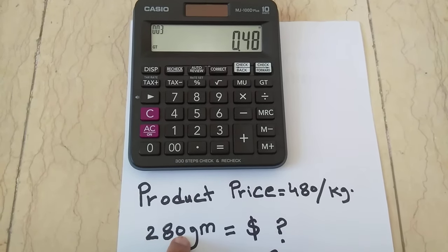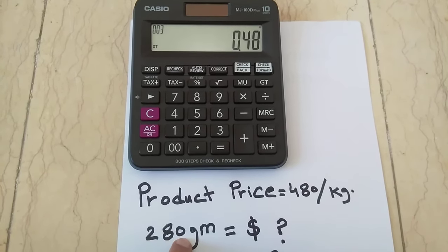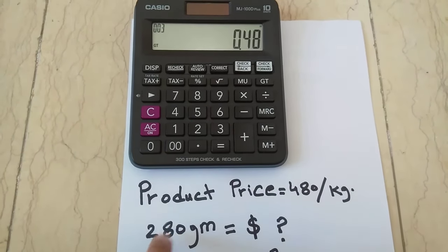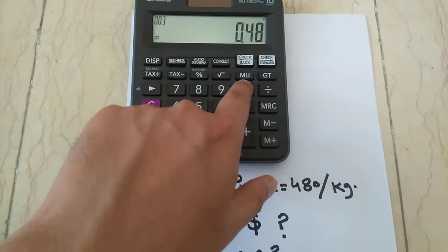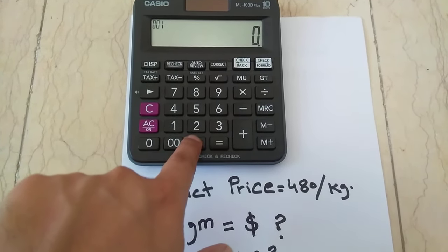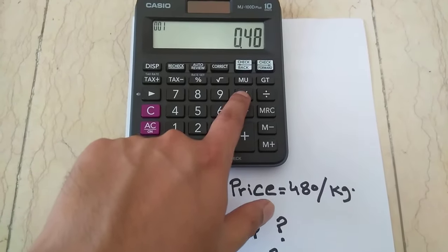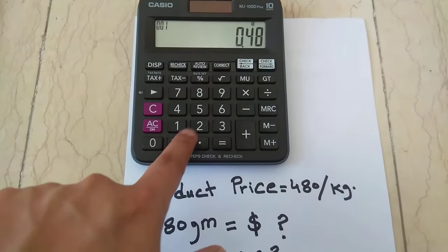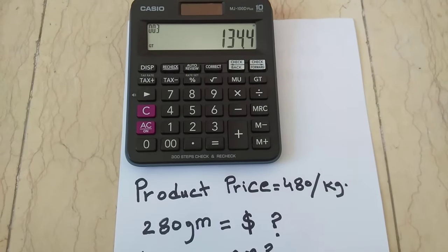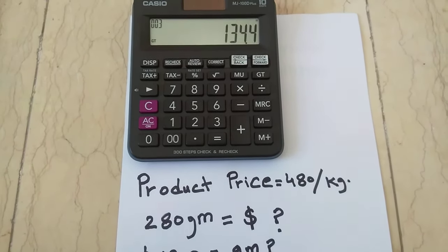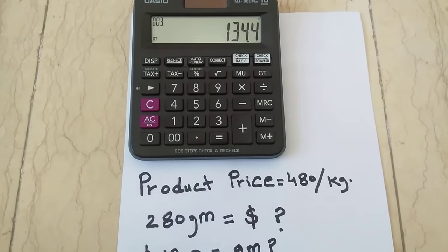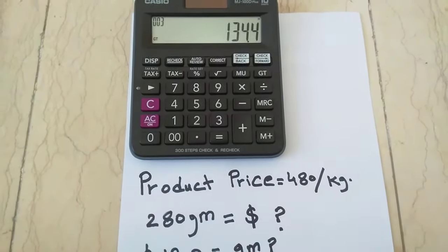The second step: you want to get 280 grams, so you take 0.48 and multiply it by 280. That gives you 134.4. So you have to spend 134 dollars to get 280 grams of that particular product.